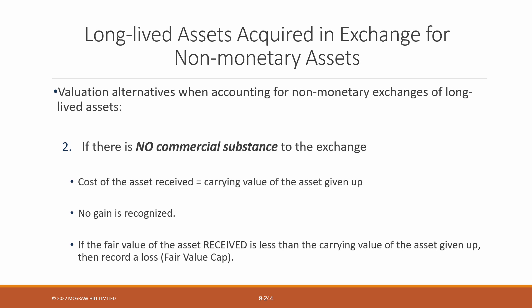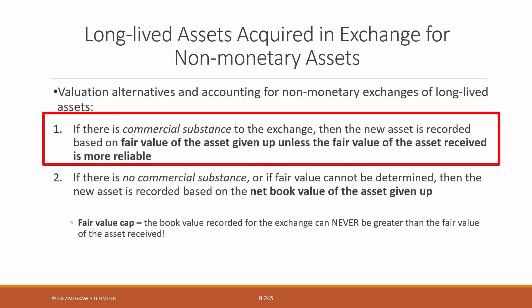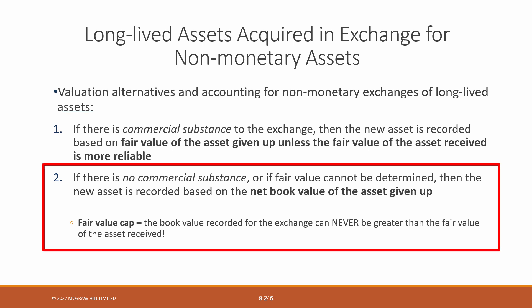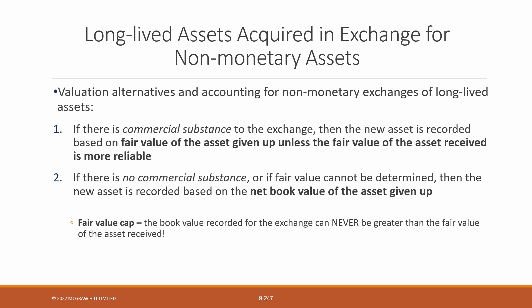That's it for non-monetary exchanges. To summarize: if there is commercial substance to a non-monetary transaction, we report the asset received at the fair value of the asset given up, unless the fair value of the asset received is more reliable. If there is no commercial substance, we record the asset received at the carrying value of the asset given up, but we must ensure that the carrying value is less than the fair value of the asset received. If it is not, then we report a loss on the income statement. Examples will be provided in a separate video so you can better understand the application of these standards to non-monetary exchanges.